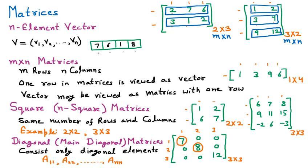So these are the types of matrices we have covered: vectors, n×n matrices, square matrices, and diagonal matrices. This is all about matrices.